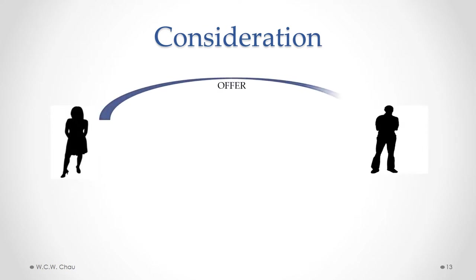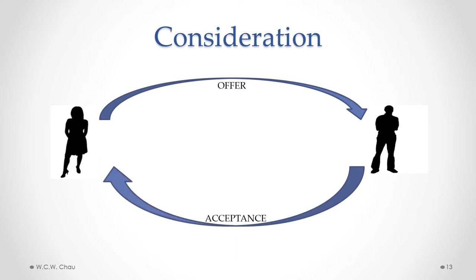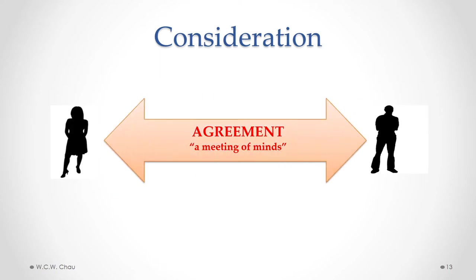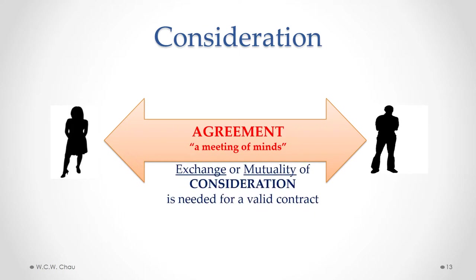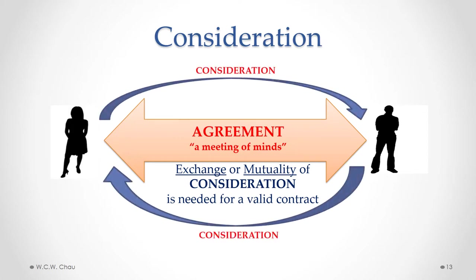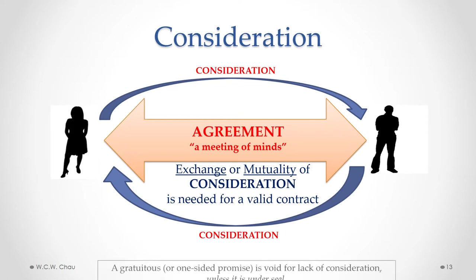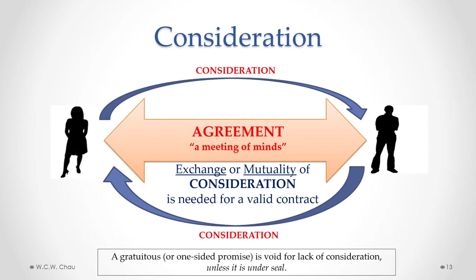We have two parties: one person makes an offer to the other and that second person accepts — providing acceptance — which results in an agreement or meeting of minds, as discussed in Module 3a. What we also need for a legally binding contract is an exchange or mutuality of consideration. Consideration has to flow from one party to the other and vice versa. If we have just a one-sided or gratuitous promise where one party is making a promise and the other party is not providing anything in exchange, that promise is void for lack of consideration.